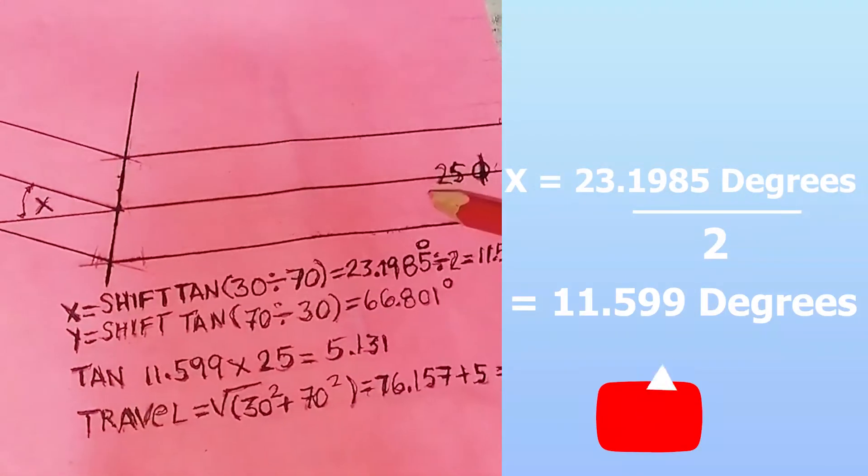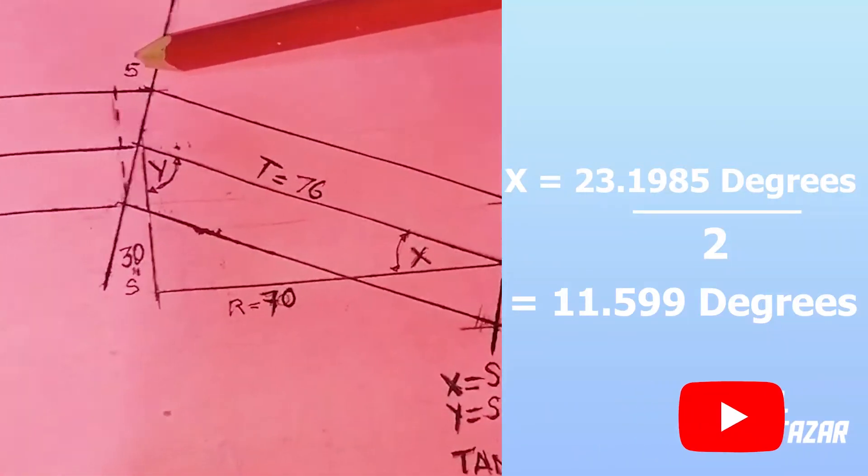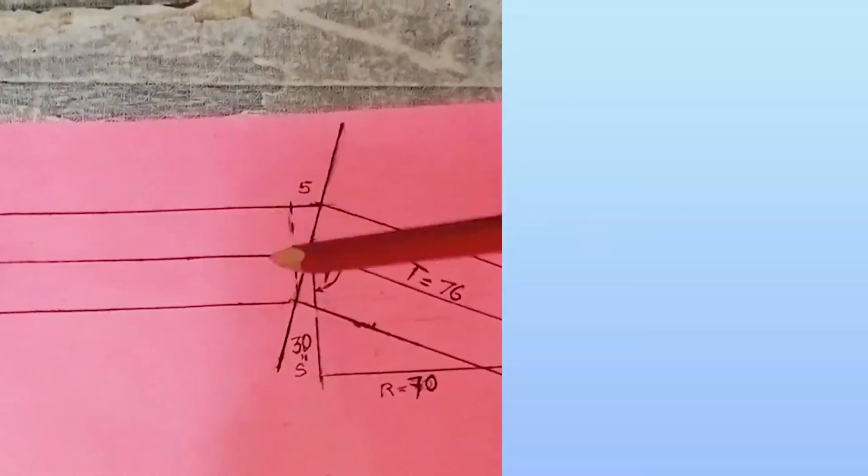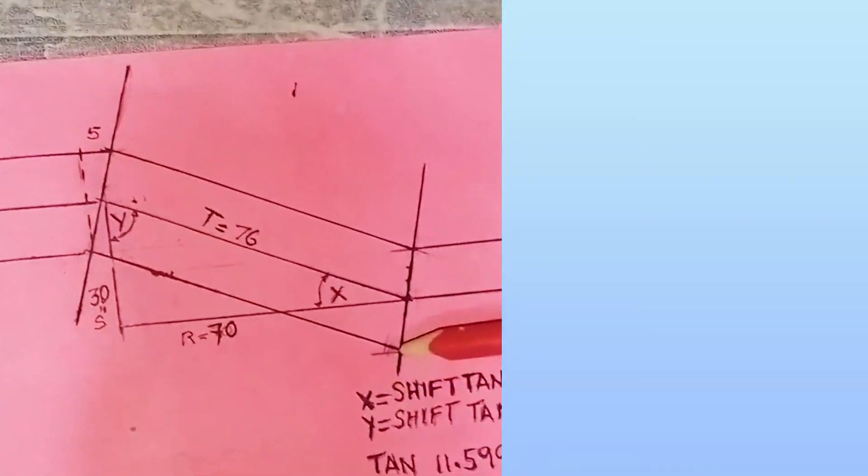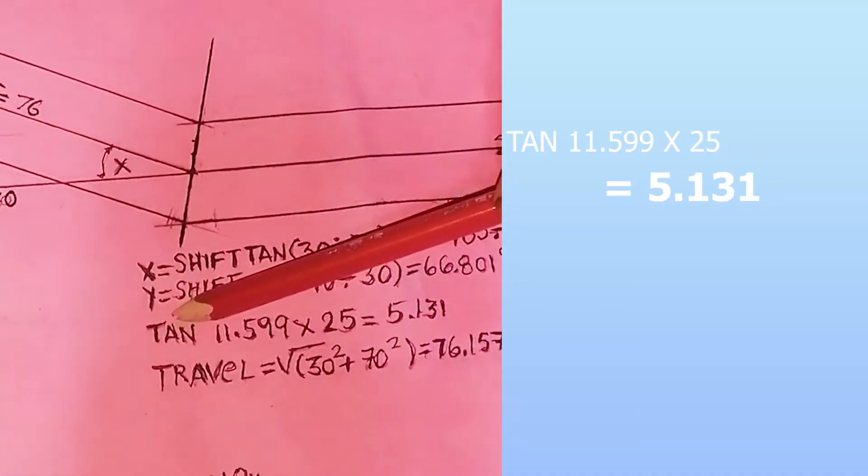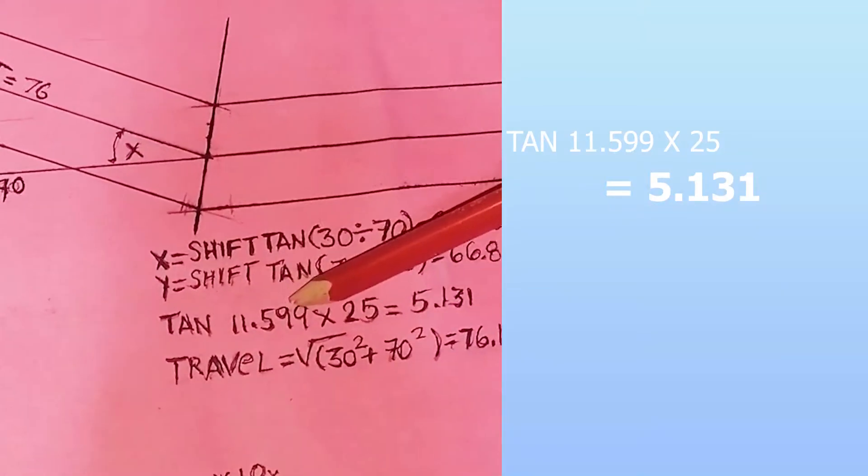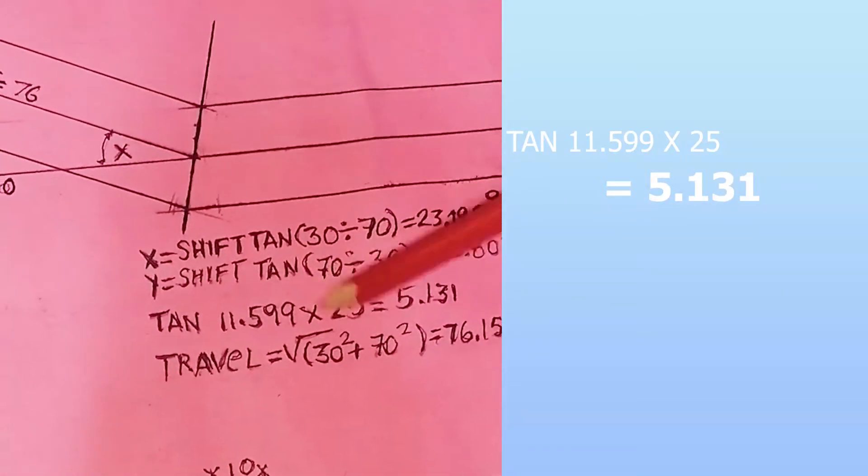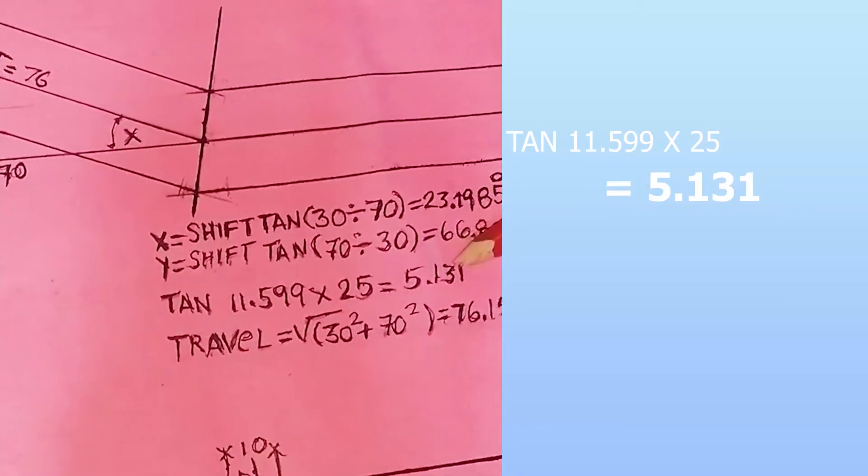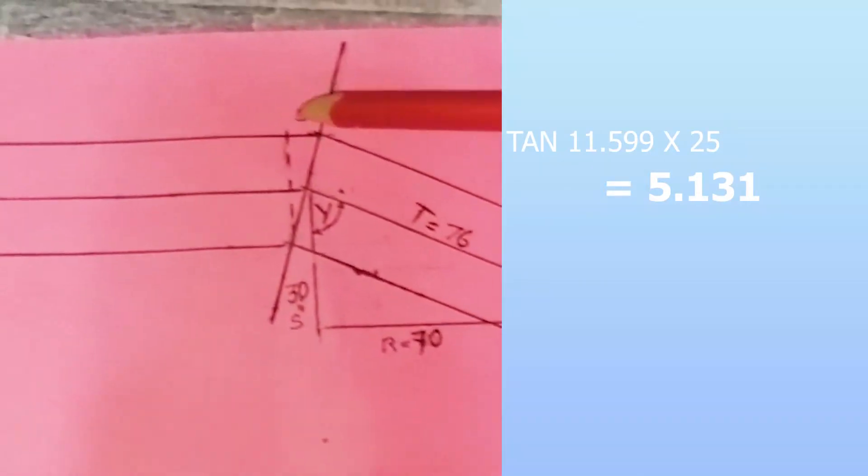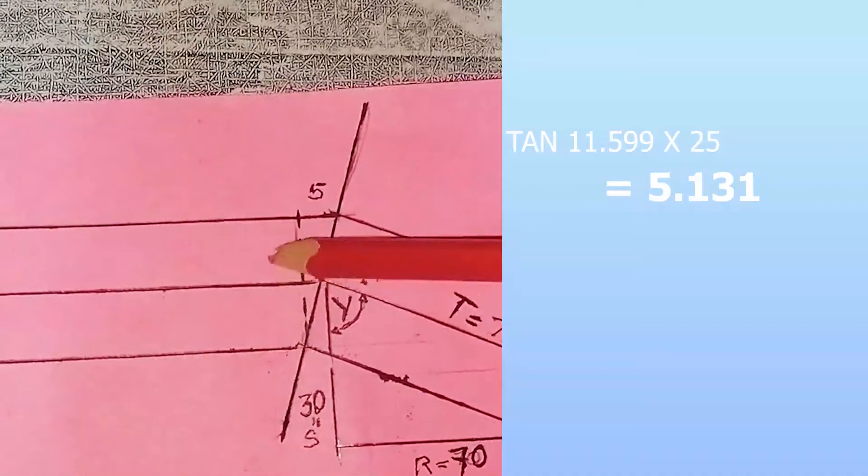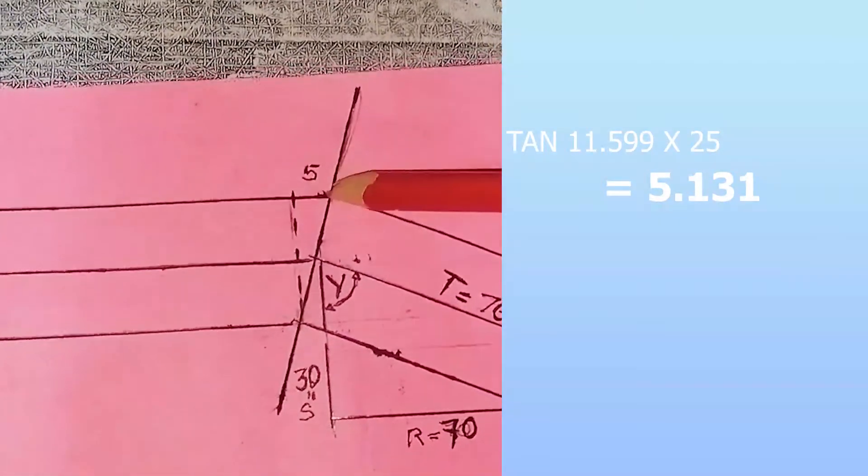Ngayon, para makuha mo ngayon itong 5 na to, ito 25 to, 25 yung tubo natin. Yung pagkuha, tangent 11.599 degrees divided by 25 equals 5.131. Kaya ito yung magiging, kumbaga sa iset nito. Ito yung run 25, ito yung set 5mm.